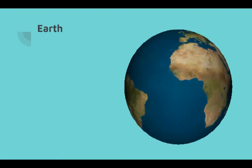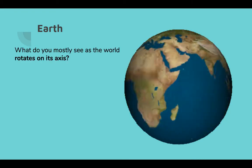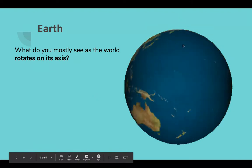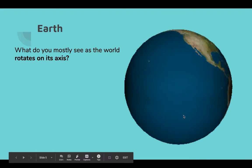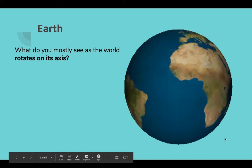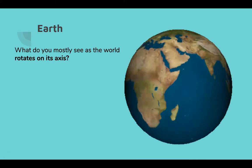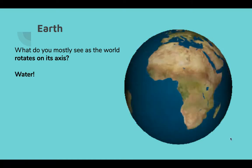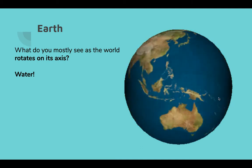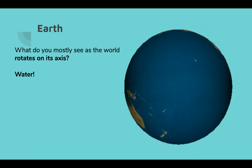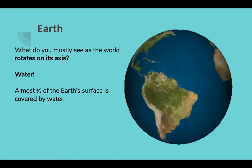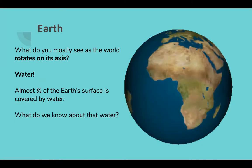What we see here is a gif of the earth rotating on its axis — that invisible line connecting the top to the bottom. As it rotates, what do you see the most of? If you're like me, you probably said water. We do see some land masses, but mostly we see a lot of blue — a lot of water — because almost two-thirds of the earth's surface is covered by water.